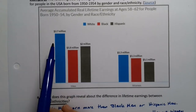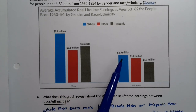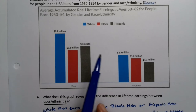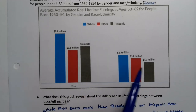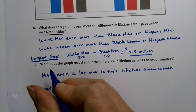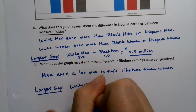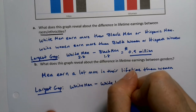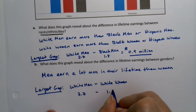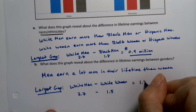Where is the largest gender gap? The largest gap is for white men minus white women at 1.2 million dollars, as opposed to black men minus black women at 0.5 million dollars. Hispanic men minus Hispanic women is 0.9 million dollars. So the largest gender gap is white men minus white women: 2.7 minus 1.5 equals 1.2 million dollars difference.